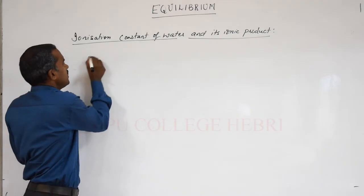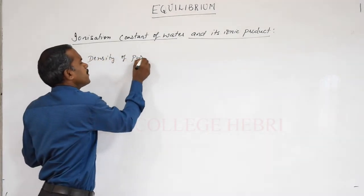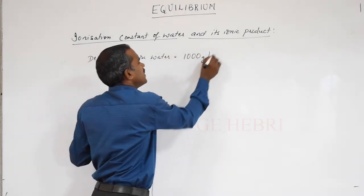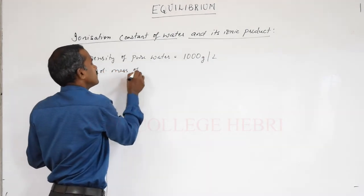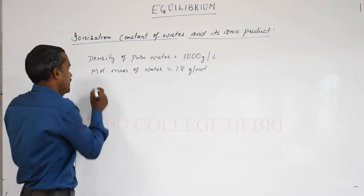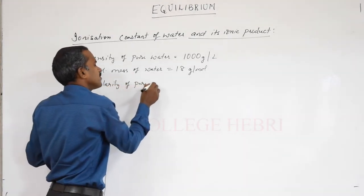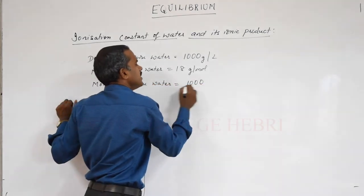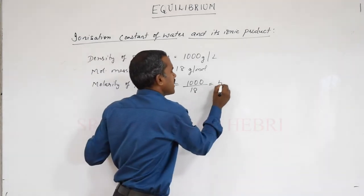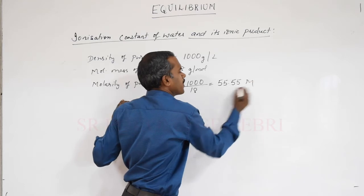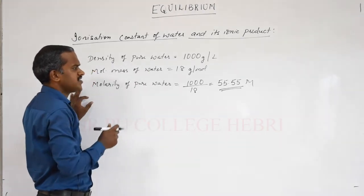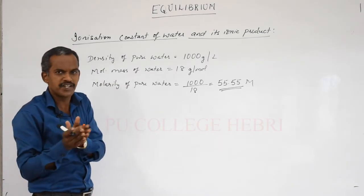The density of pure water is 1000 grams per liter, and we know the molar mass of water is 18 grams per mole. From this we can calculate the molarity of pure water as 1000 divided by 18, which gives 55.55 molar. This is the molarity of pure water from its density and molar mass. From this, we can understand the ratio of dissociated to undissociated water.